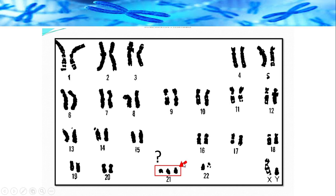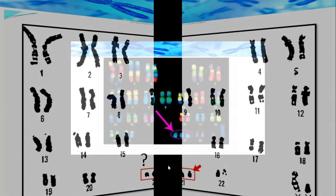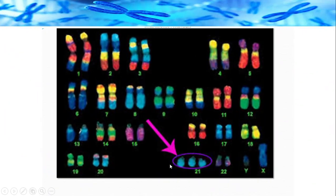Here you can see the karyotype of a Down syndrome person — there are three copies of the 21st chromosome. The same is shown in color for easier identification, though chromosomes are not naturally colored like this.